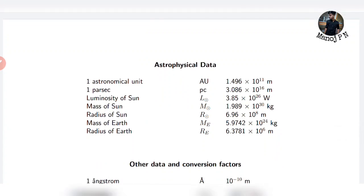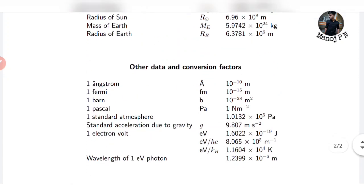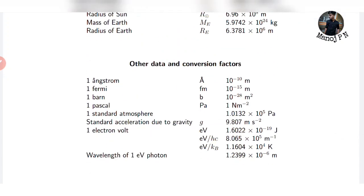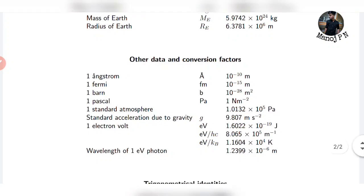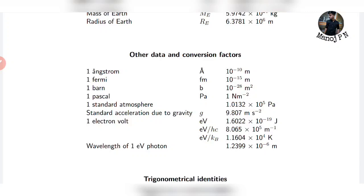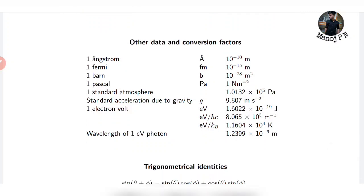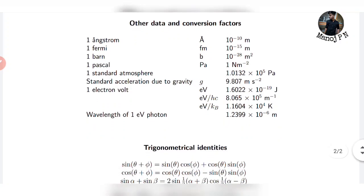We also have the luminosity of the Sun, the mass of the Earth, and the radius of the Earth. These are very important data values. Conversion factors include: 1 angstrom = 10⁻¹⁰ metres, and 1 atm = 10⁵ Pa.